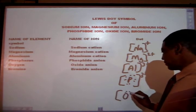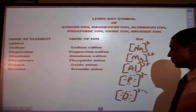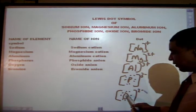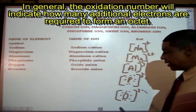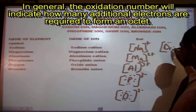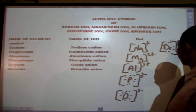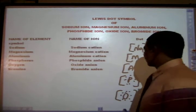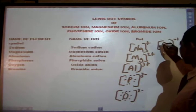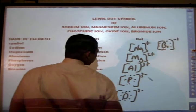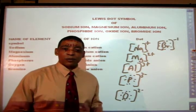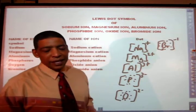Oxygen oxide anion: 8 dots, brackets, charge outside of the brackets. This charge also indicates the distance that the element is from the noble gases. Oxygen is in group 6; the noble gases are in group 8 — so oxygen is two groups away from group 8. And finally, bromine, Br, with 8 dots and the charge written outside of the brackets. And this is how to write Lewis dot symbols for both the atom of an element as well as the ion of an element.